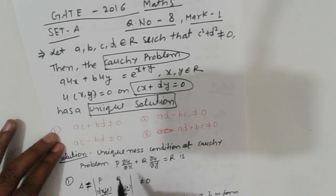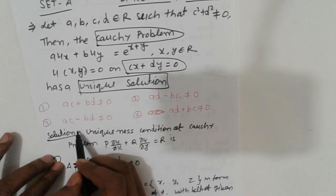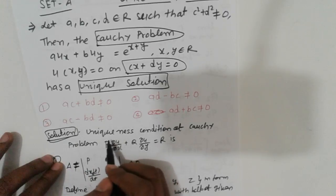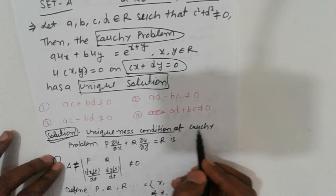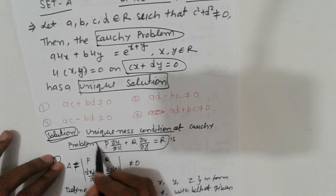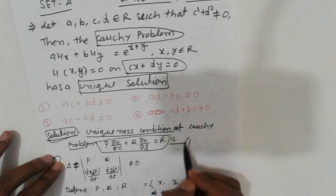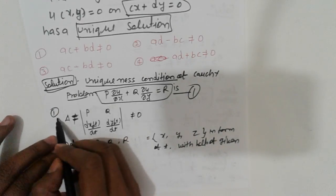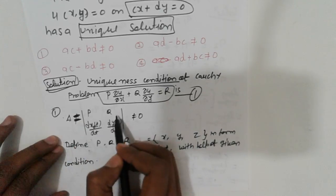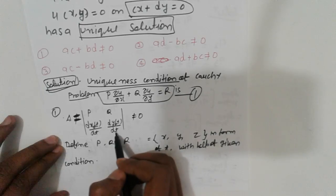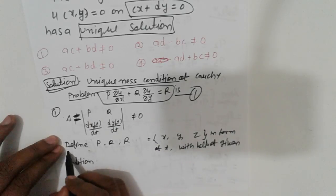The question asks: has unique solution? Four options are given. First, write down the uniqueness condition for Cauchy problems. For the PDE p del u/del x + q del u/del y = r, the uniqueness condition is that delta equals the determinant of p, q and dx₀/dt, dy₀/dt, which must not equal zero — then we get a unique solution.